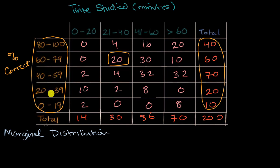Now a marginal distribution could be represented as counts or as percentages. So if you represent it as percentages, you would divide each of these counts by the total, which is 200. So 40 over 200, that would be 20 percent. 60 out of 200, that'd be 30 percent.